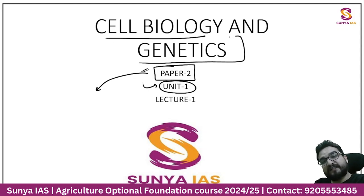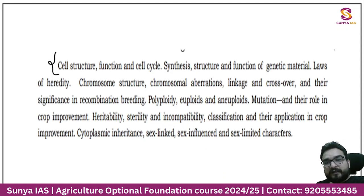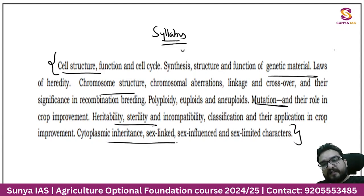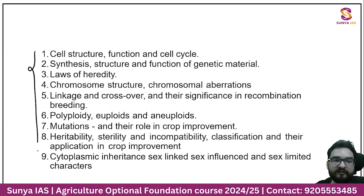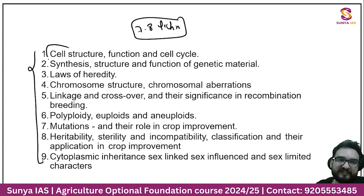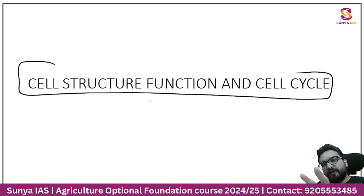Unit number one is cell biology and genetics — the most important and fundamental unit of paper number two. As per the UPSC syllabus, they want us to know about cell, genetic material, chromosome, mutation, and various other aspects. We have divided all this into nine parts, to be covered in seven to eight lectures. We start with cell structure, function, and cell cycle.